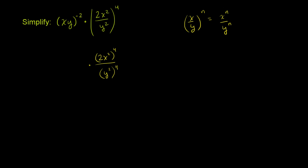Let me simplify that as well. We know that if we have x times y to the nth power, this is the same thing as x to the n times y to the n — you take each of the powers separately and then take the product. So if we use that same property here, xy to the negative 2 is going to be the same exact thing as x to the negative 2 times y to the negative 2.